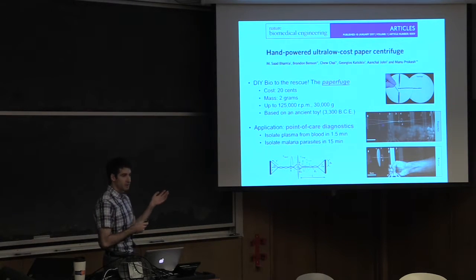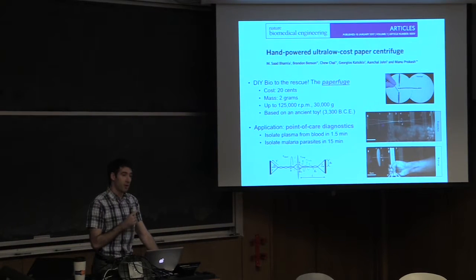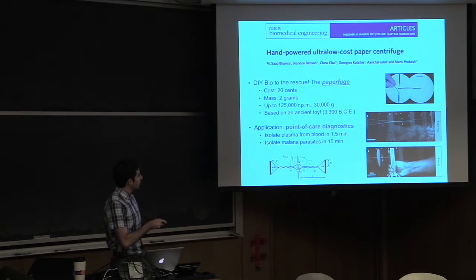And it spins up to 30,000 G. And based on some biophysical calculations of the torque and so forth, they estimate the theoretical max is one million RPM. And so you can kind of imagine how this works. There's two little pieces of paper here connected by a string.